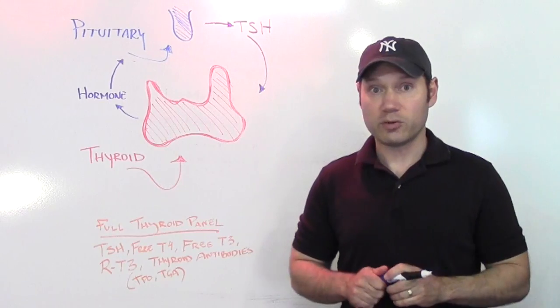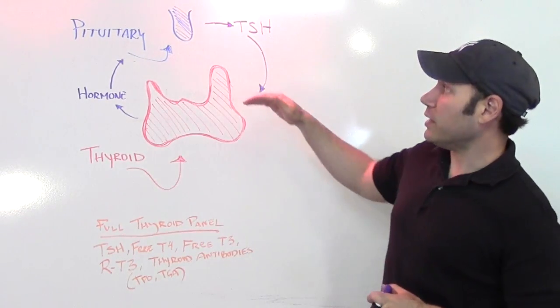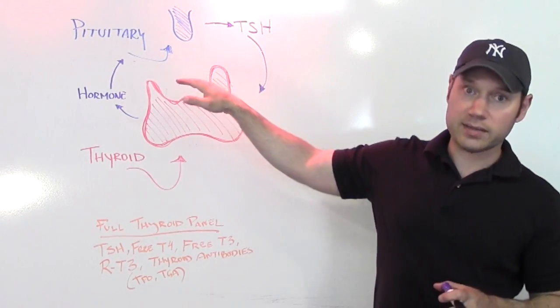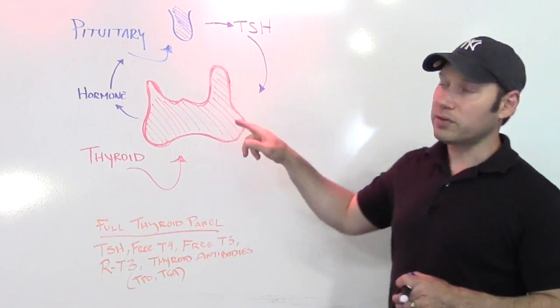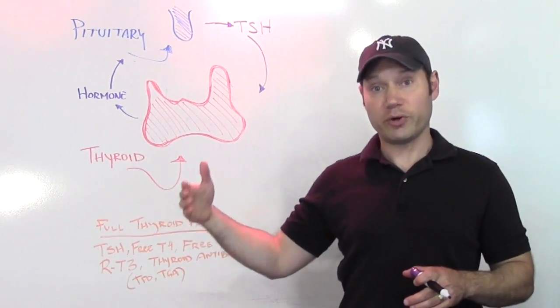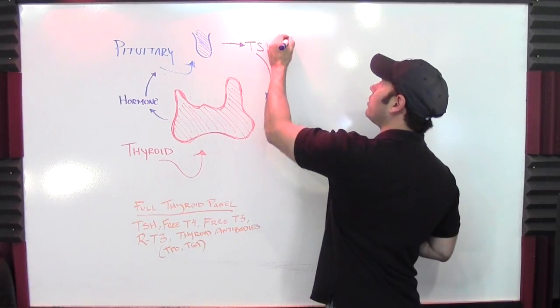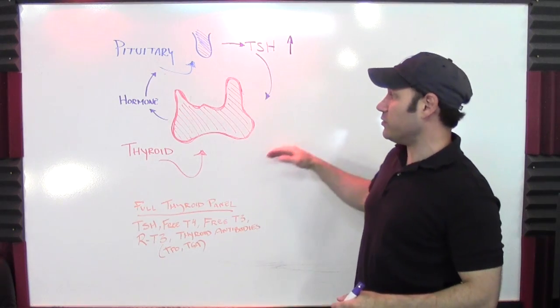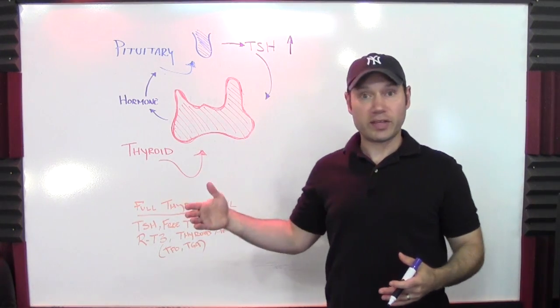TSH stands for thyroid stimulating hormone, and that is a hormone that's produced by the pituitary gland, and it's a way for it to signal the thyroid to make more thyroid hormone. So that means the higher your TSH, that's indicative of lower thyroid function, right? That makes sense, right?